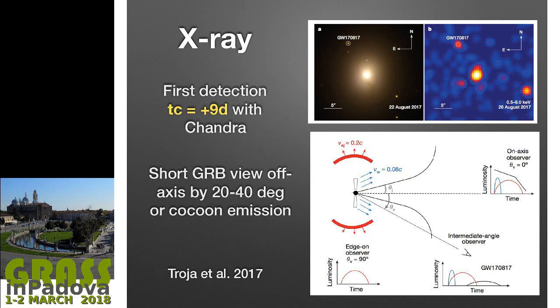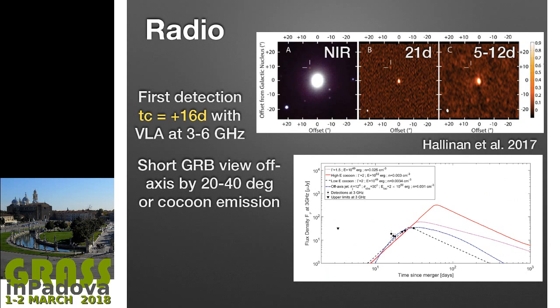About 10 days later, X-ray emission emerges from the remnant—something which will last much longer than the optical kilonova light. The first X-ray detection was at nine days, and then it grows in time. This is consistent with two scenarios: off-axis emission from a standard GRB jet, or a more symmetric cocoon emission. People have different opinions on this.